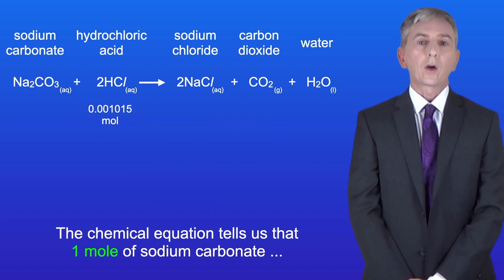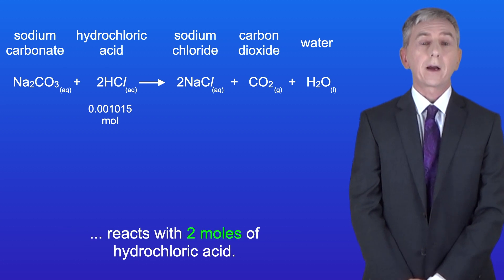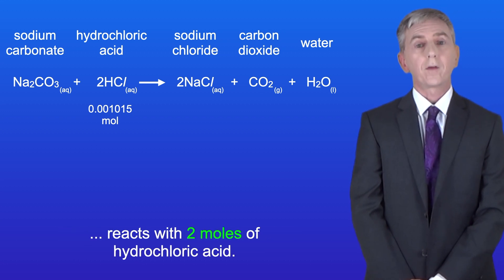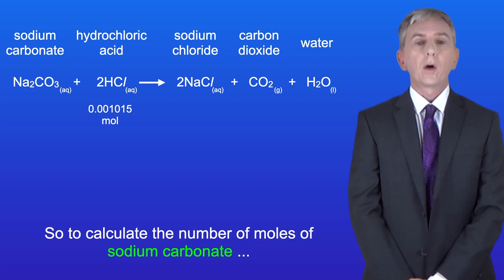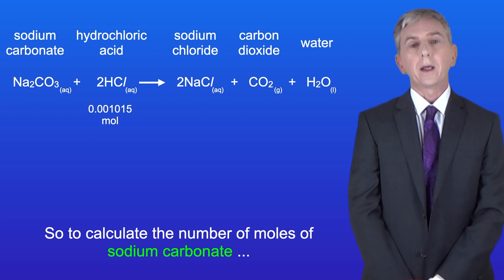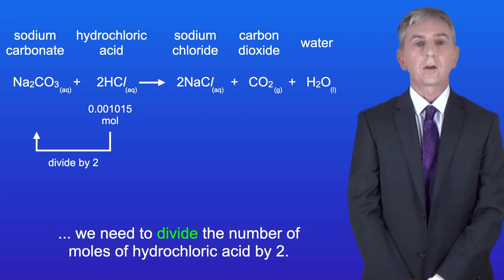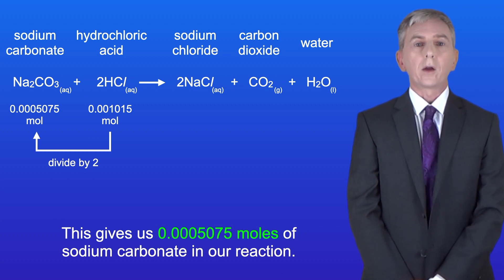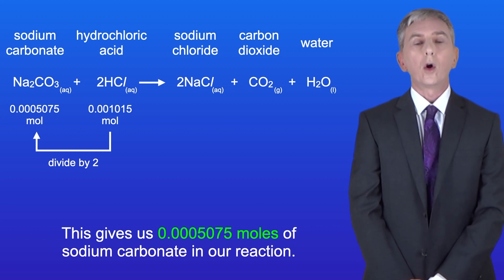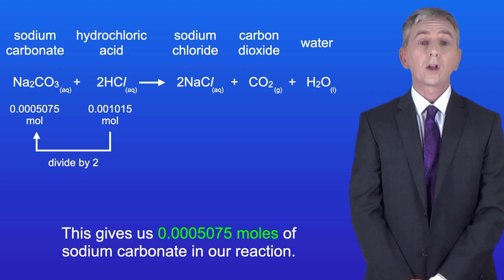The chemical equation tells us that one mole of sodium carbonate reacts with two moles of hydrochloric acid. So to calculate the moles of sodium carbonate we divide the moles of hydrochloric acid by two. This gives us 0.0005075 moles of sodium carbonate in our reaction.